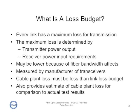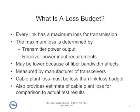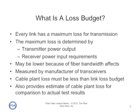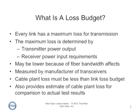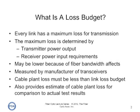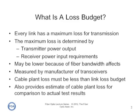That loss is determined by the output of the transmitter and the required power at the receiver, although it may be lower because of fiber bandwidth effects on high-speed multimode or long single-mode links. The loss budget is established by the manufacturer of the transceiver, and the cable plant loss that you operate the link over must be less than that link loss budget.